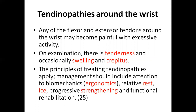Some tendinopathies around the wrist can cause wrist pain. Any flexor or extensor tendon around the wrist may become painful with excess activity. On examination there is tenderness and sometimes swelling. The principles of treating these tendinopathies include attention to biomechanics — changing the position, posture, and different mechanisms that make the wrist less prone to injury — as well as changing sporting techniques. Management includes ergonomics, RICE, and strengthening and functional rehabilitation of the involved tendons.